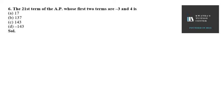Let's start with question number 6 of exercise 5.1. It says the 21st term of the AP whose first two terms are minus 3 and next term is 4 and so on. Now we need to find A21.